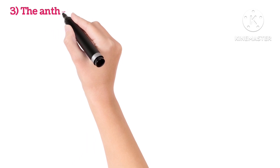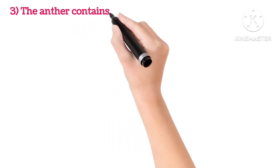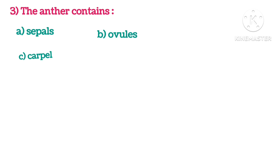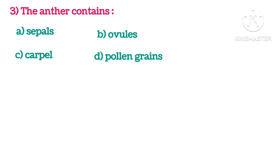Third: The anther contains — A. Sepals, B. Ovules, C. Carpels, D. Pollen grains. The correct answer is D. Pollen grains.